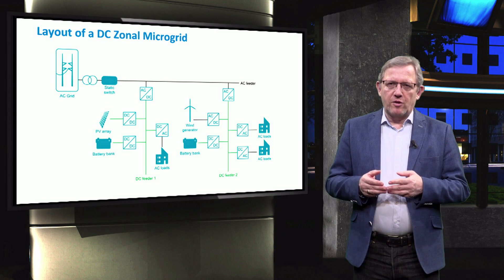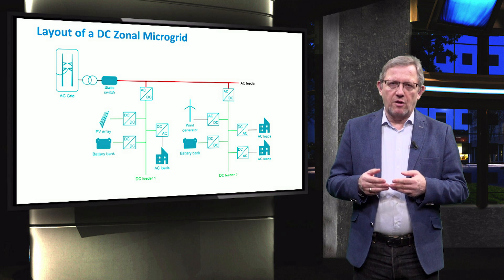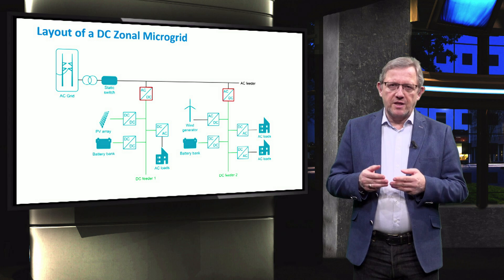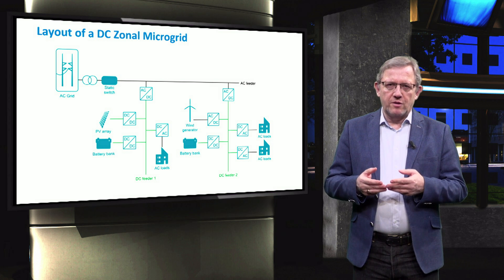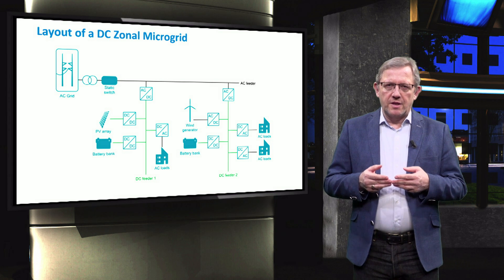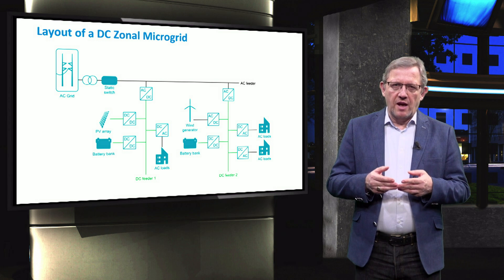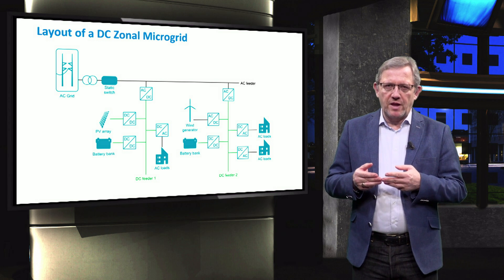In DC zonal microgrids, several DC feeders are connected to the main AC bus through a centralized bidirectional AC-to-DC converter. The DC zonal microgrid concept shown in the figure has two different zones which allow different DC voltage levels. The goal is to achieve the highest efficiency while minimizing conversion steps. For example, if the microgrid operates at 350V, stepping down to 2V DC for LED lights is a large voltage step; therefore it is more efficient to divide the microgrid into two zones and avoid a step-down converter in between. This architecture provides the same advantages and disadvantages as DC microgrids, but the DC zonal microgrid allows different DC bus voltages and management techniques at each feeder.